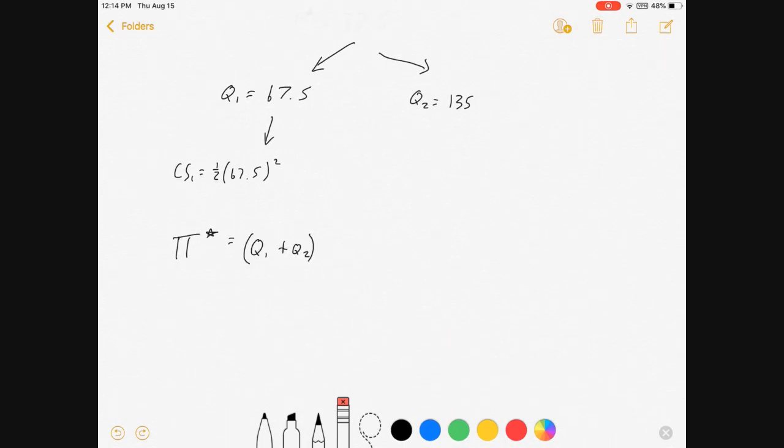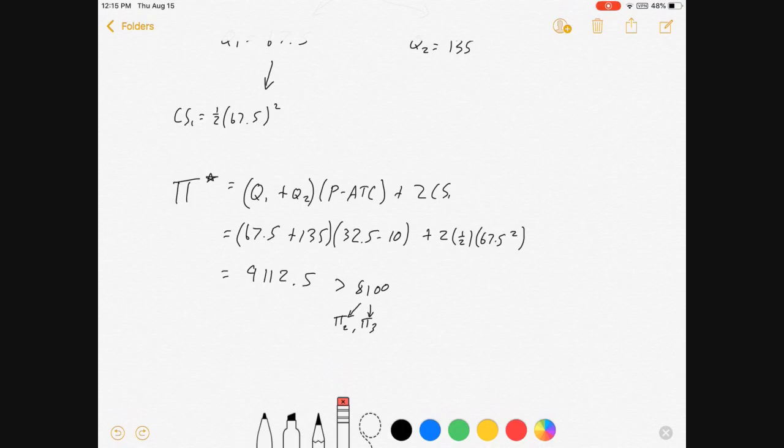What's the profit equal to? Profit = (Q1 + Q2) times (P - ATC) plus 2CS1. That's 67.5 (your Q1) plus 135 (your Q2) times (32.5 - 10) plus 2 times 1/2 times 67.5 squared. When all the dust settles, that's 9112.5. You'll see that that is greater than 8100, which is the profit we got in case 2 and case 3. This will be better than either of the choosing one customer or the other. Yes, we lost a little bit on consumer 2, but our gains on consumer 1 made it worth it.